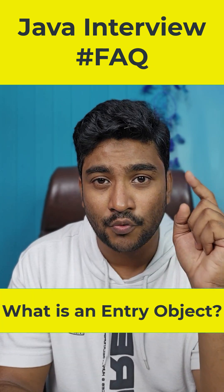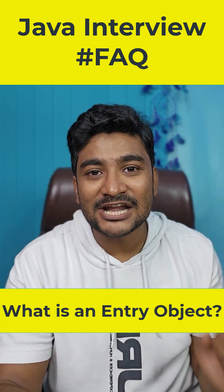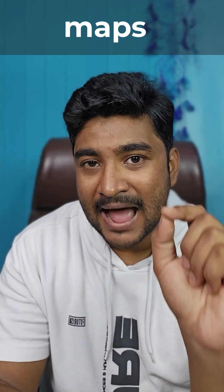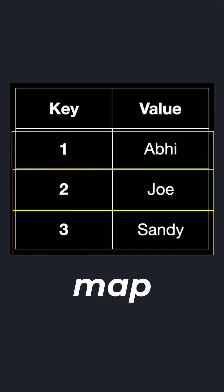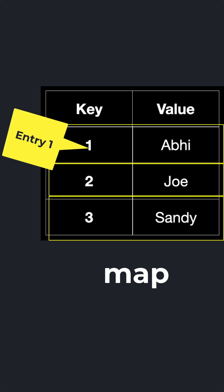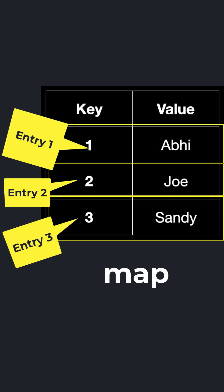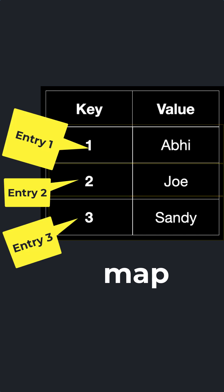Here is a Java interview question: What is an Entry object in Java? We have maps in Java and inside a map we store key-value pairs, but we do not store them directly. We store the key and value pair inside a box, and we store that box inside the map. Those boxes are called entries, or Entry.